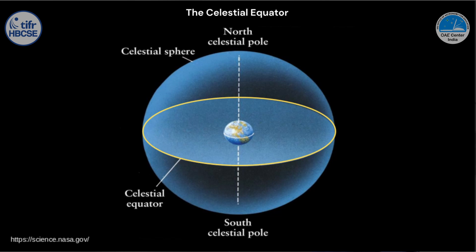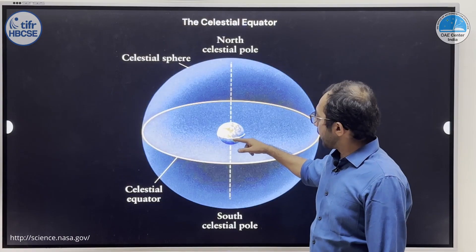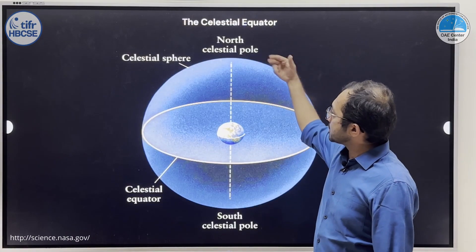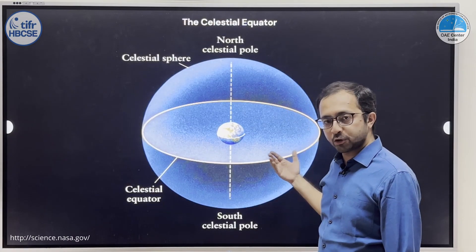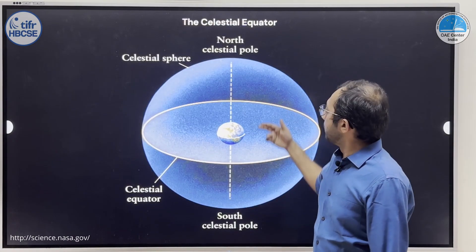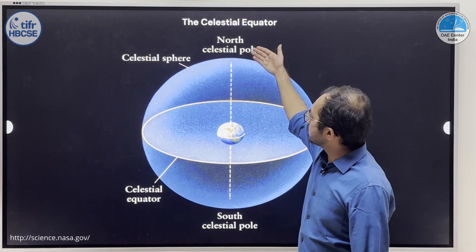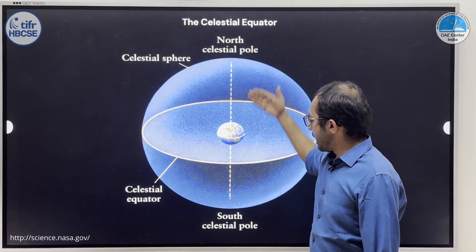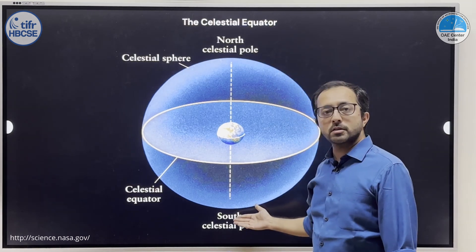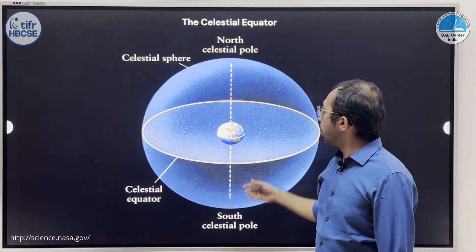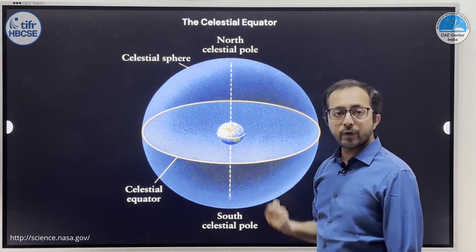The equator on earth is expanded on the sphere and it is called as the celestial equator. Just as we have the north and south poles of earth, we have the north celestial pole and the south celestial pole on the celestial sphere.